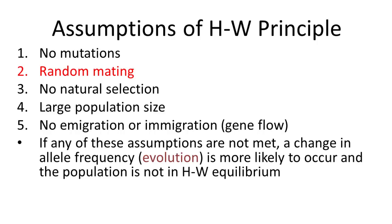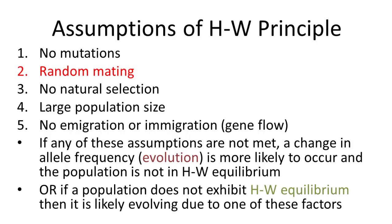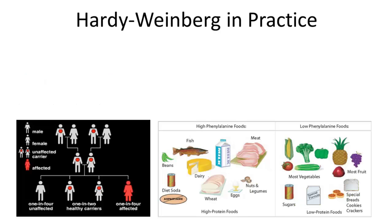If any of these assumptions are not met, that's where we have evolution occurring. We say it's not in Hardy-Weinberg equilibrium. Or in other words, if a population doesn't exhibit Hardy-Weinberg equilibrium, then it is evolving due to one of these factors.